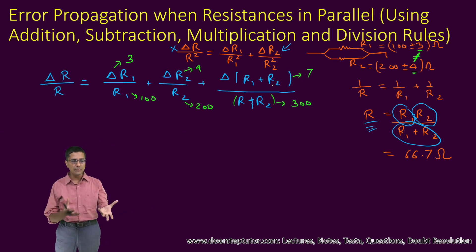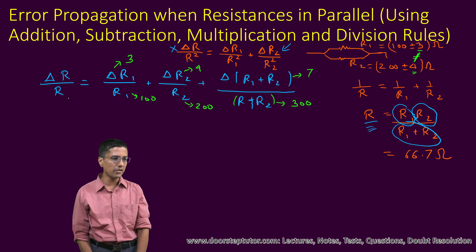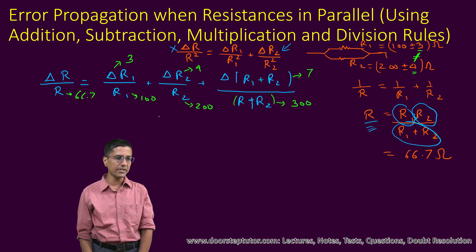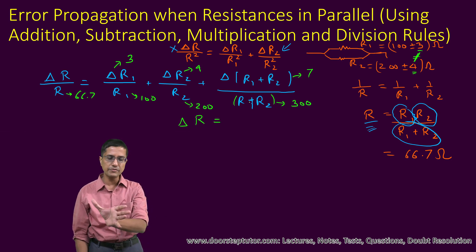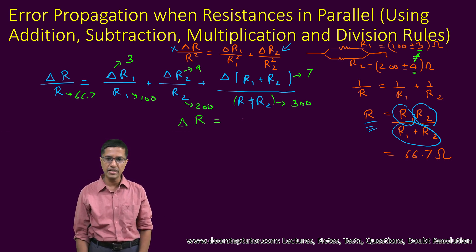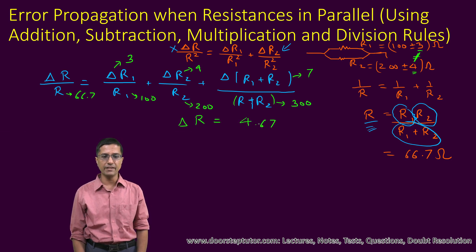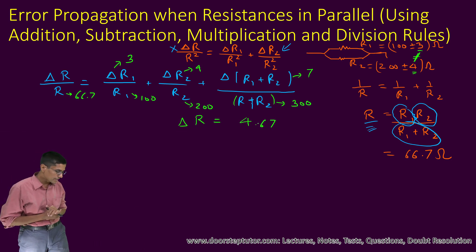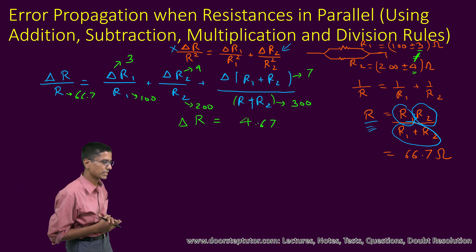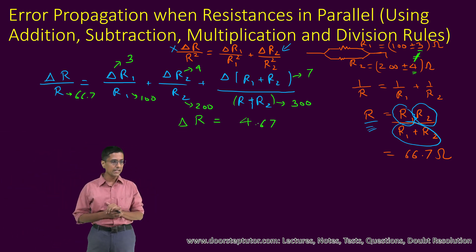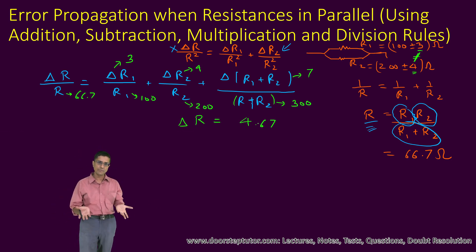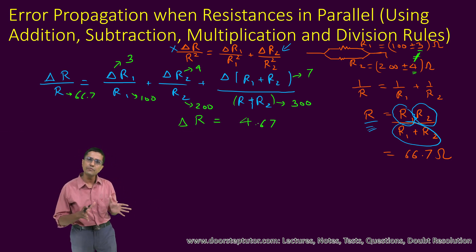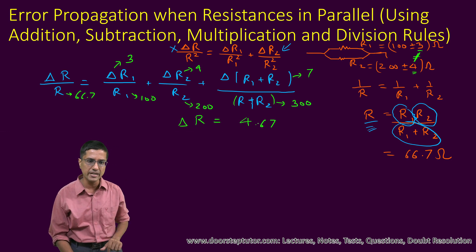We know R = 66.7, so from all substituted values we can calculate delta R = 4.67 ohm. This is a reasonable value and it is not incorrect. However, it is an overestimate. Overestimation of errors is acceptable — we should never underestimate them — but we should understand why this is an overestimate.